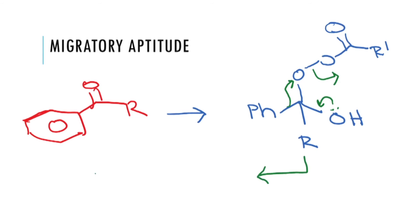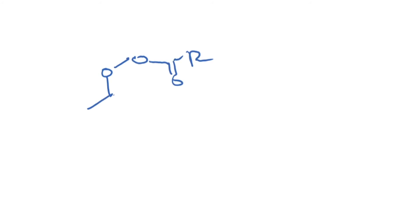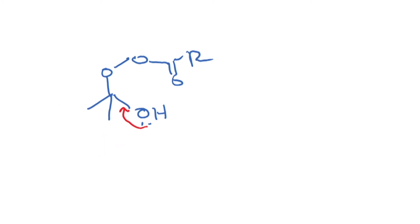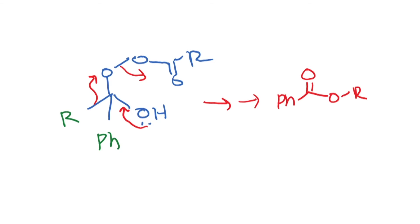In the intermediate — O–O–C=O–R′ with OH — there are two possibilities. Possibility 1: the lone pair allows the phenyl ring to migrate and kick out the carboxylate, giving R–C=O–O–Ph. Possibility 2: the R group migrates instead, giving Ph–C=O–O–R. The two products are clearly different.